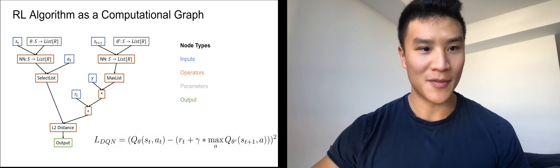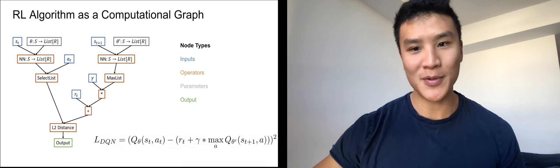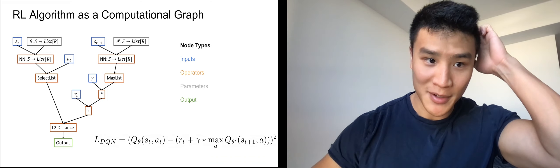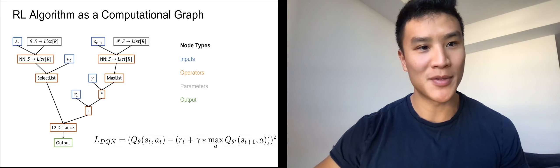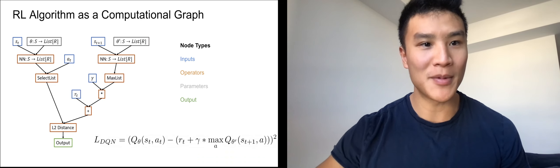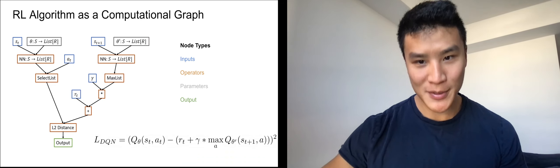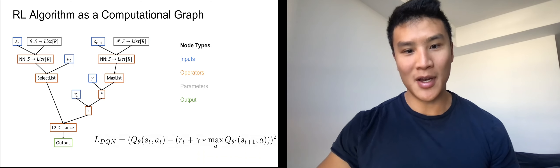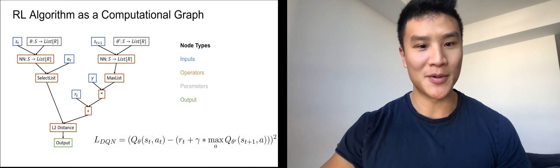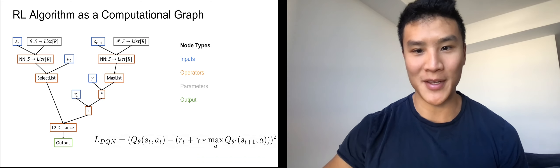We have operator nodes in blue which apply things like neural networks and basic math operators. Parameter nodes in gray represent the parameters of neural networks. Finally, the output node in green computes the final scalar value which will be minimized with gradient descent.